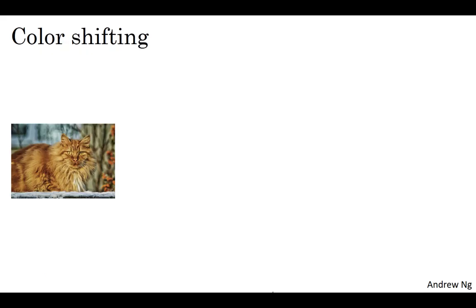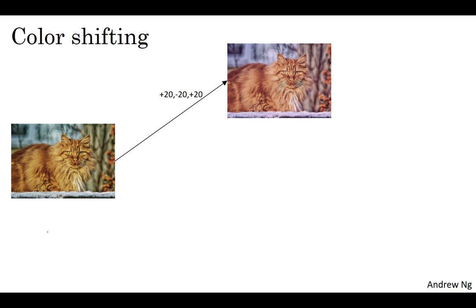A second type of data augmentation that is commonly used is color shifting. So given a picture like this, let's say you add to the R, G, and B channels different distortions. In this example, we are adding to the red and blue channels, and subtracting from the green channel. So red and blue make purple. This makes the whole image a bit more purpley, and that creates a distorted image for your training set. For illustration purposes, I'm making somewhat dramatic changes to the colors. Because in practice, you draw R, G, and B from some distribution that could be quite small as well.